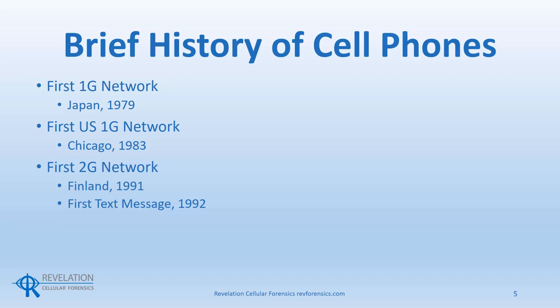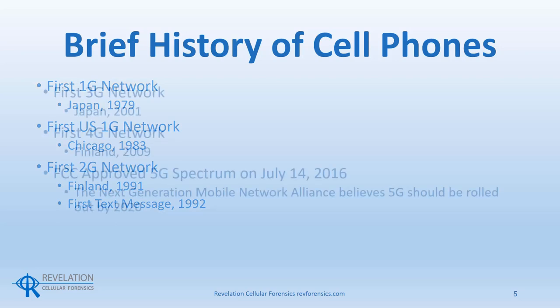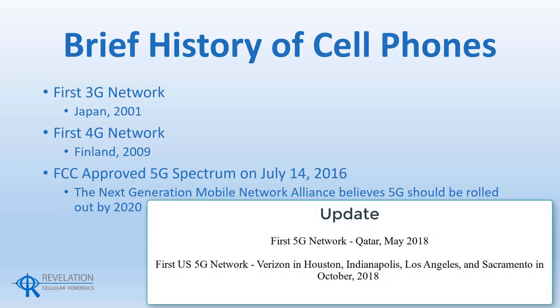Here are some of the milestones. The first 1G network was in Japan in 1979. The first US 1G network was in Chicago in 1983. The first 2G network was in Finland in 1991, and the first text message was sent in 1992. The first 3G network was in Japan in 2001. The first 4G network was in Finland in 2009. The FCC approved 5G spectrum on July 14, 2016. The Next Generation Mobile Network Alliance believes that 5G should be rolled out by 2020.